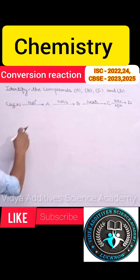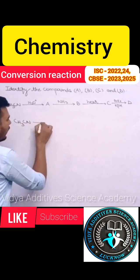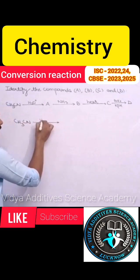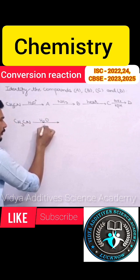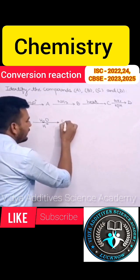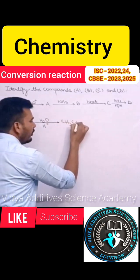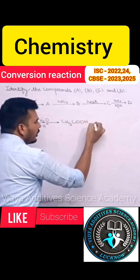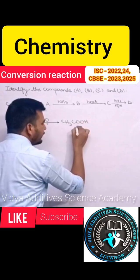So here we have to identify compound A, B, C and D. So students remember when methyl cyanide or any cyanide undergoes complete hydrolysis in presence of acid. Here acid may be sulfuric acid or hydrochloric acid. So methyl cyanide will convert into acetic acid. So compound A is acetic acid.